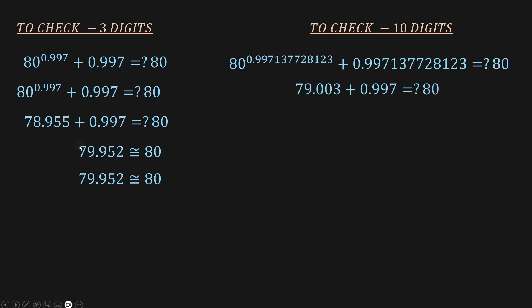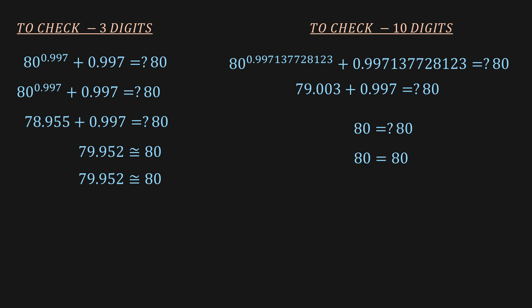Now with ten digits: with three digits we had 79.955, but with ten digits we get 79.003 plus the x term, getting very close to 80. The more digits you use, the closer you get to 80. We're just using an approximation of x, not its exact value. That was the problem for today — don't forget to subscribe, God bless you all, see you next video!